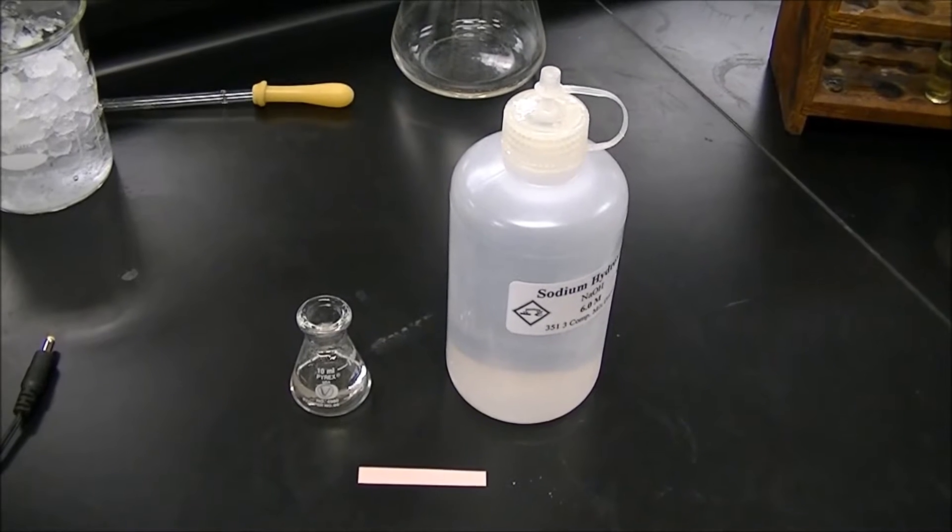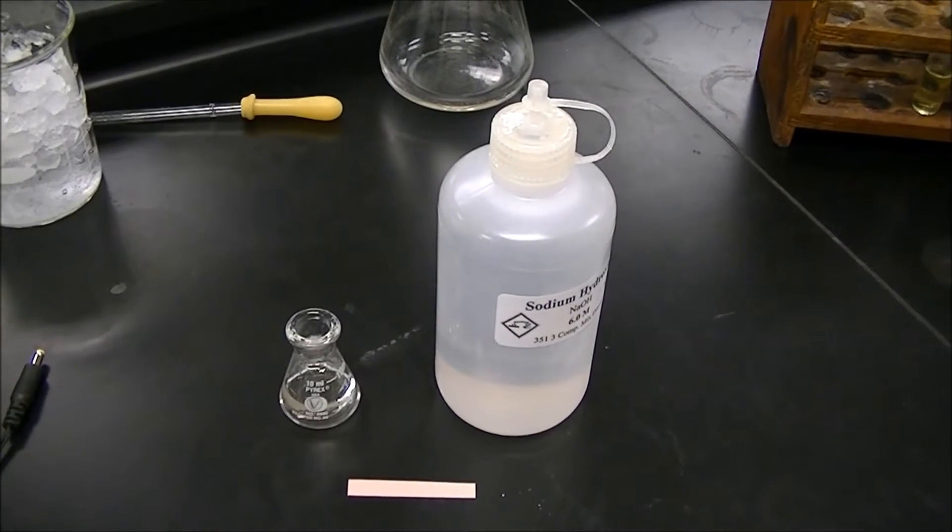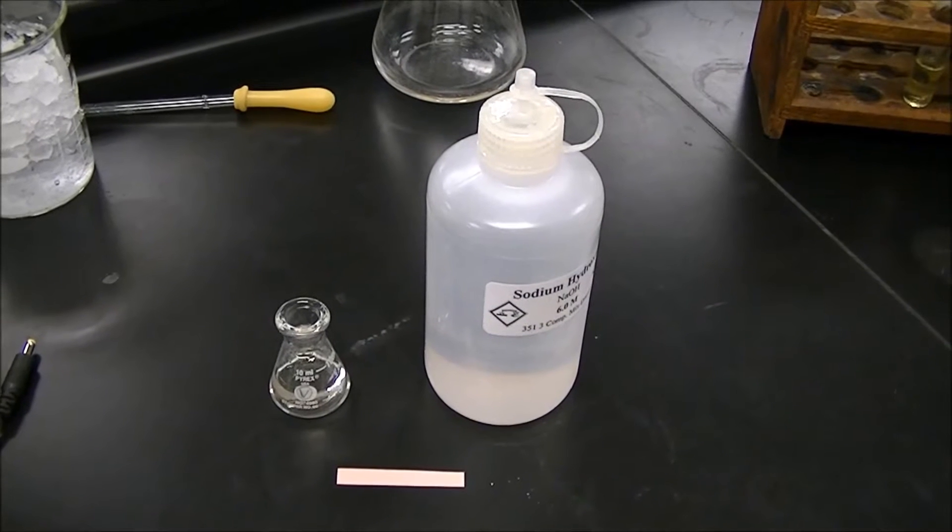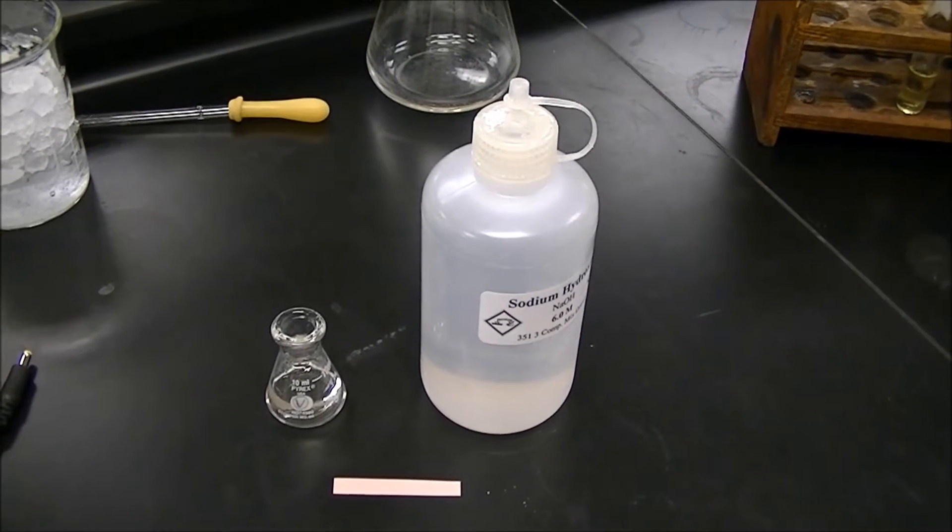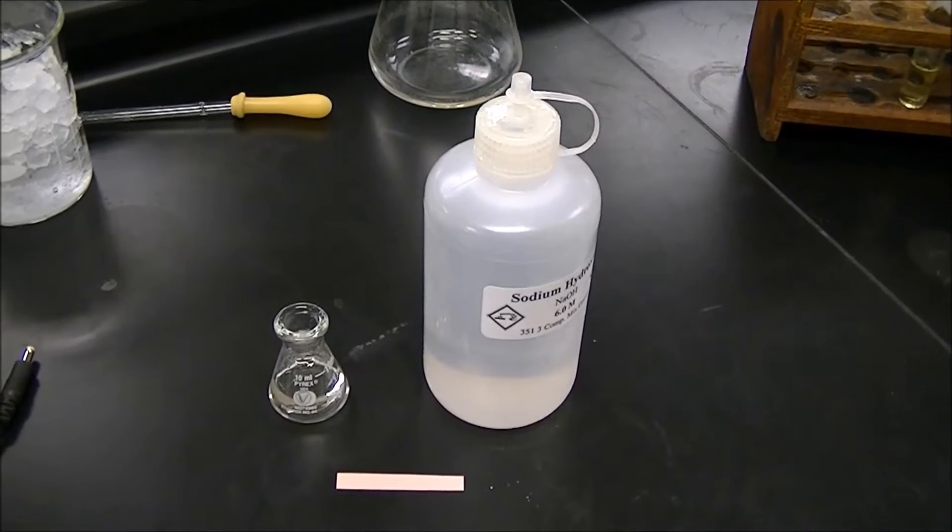Now you'll add your 6-molar NaOH to the solution until the pH is basic. This will deprotonate ethyl-4-aminobenzoate, causing it to be insoluble in water and precipitate to the bottom.